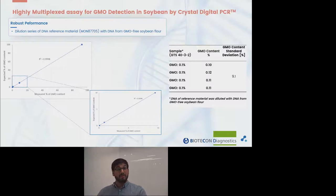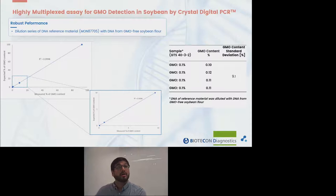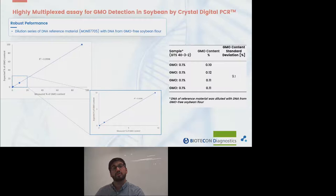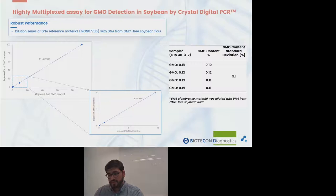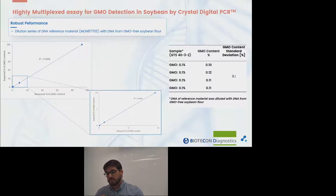We then verified the robustness of this assay on a large range of GMO content. You can see the dynamic range with a zoom in at low concentration. We observe a great correlation and linearity between measured and expected concentration within the dynamic range. Finally, we can see the results at the 0.1% technical limit, essential for EU legislation. Using the highly multiplexed assay and the Naica system, we could easily reach this 0.1% technical limit with minimal variability.